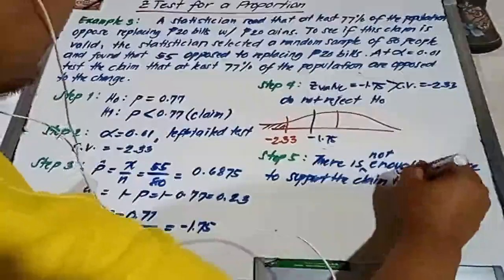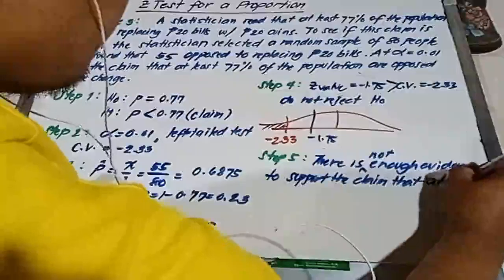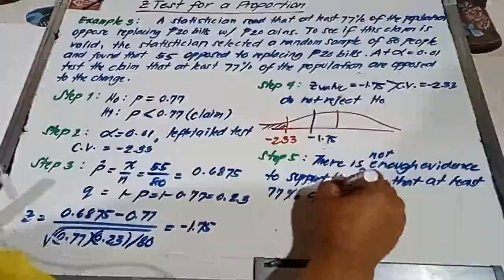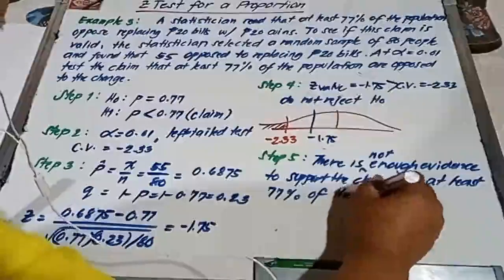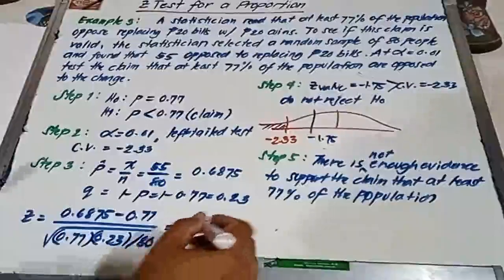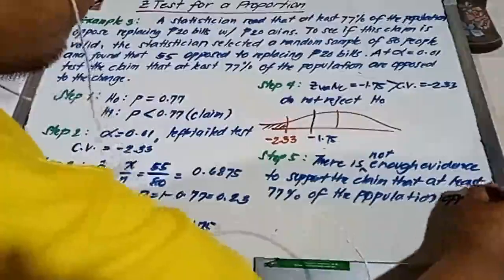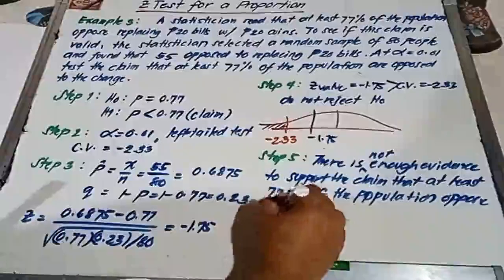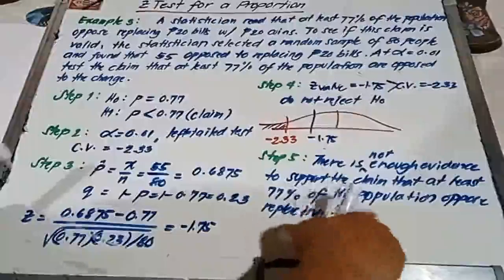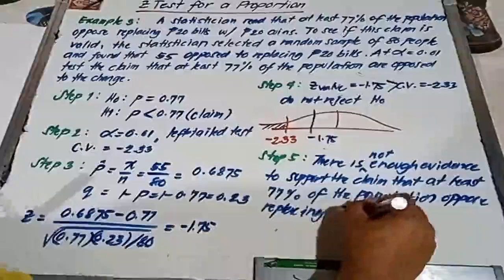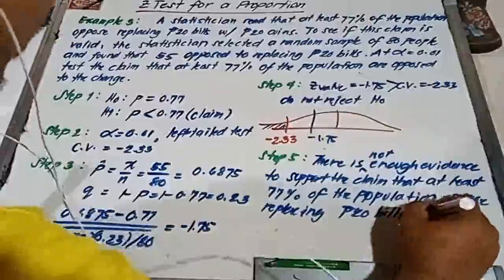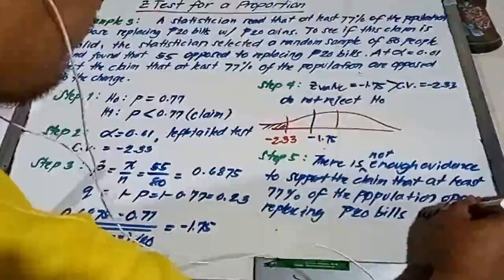That at least 77% of the population oppose replacing the 20 peso bills with 20 peso coins.